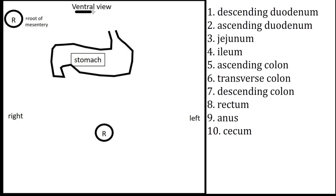We're looking at the ventral view of the dog's abdomen. Right is screen left here and animal left is screen right. We're going to begin with the stomach at the esophageal entry and we're going to describe things the way ingesta would travel, and also relative to the root of the mesentery.